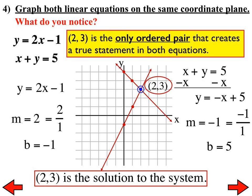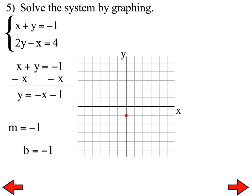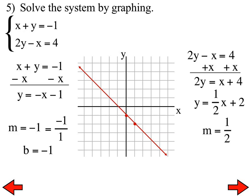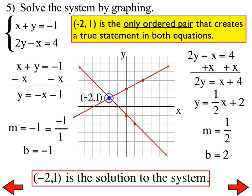I would like everybody to try number 5 — trying to find the solution to the system by graphing. The majority of you said negative 2 comma 1 is the solution. A couple of you had something close but not exact, which means your graphs were not nice and neat. If you're off by a little bit, the lines will cross at a different point, so you need to make sure your graphs are neat. Putting the first equation in slope-intercept form gives this, and the second as well. These two lines intersect at the ordered pair negative 2 comma 1 — therefore that is the solution to the system, meaning it is the only ordered pair that creates a true statement in both equations.